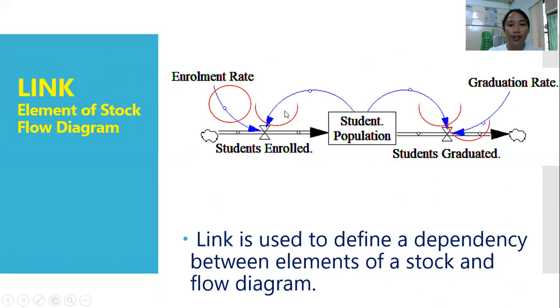Now, we have the links. Link is used to define a dependency between elements of the stock and the flow diagram. We can see it is represented by these blue arrows. This defines how dependent is this student enrollment rate and student enrollment to student population, as well as the others.